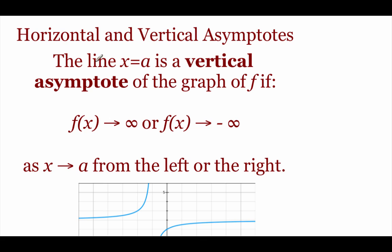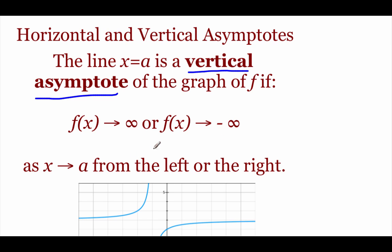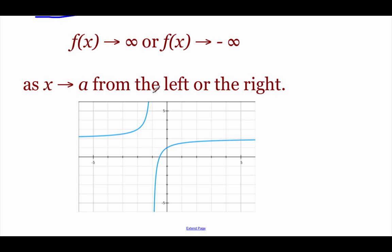A couple of quick definitions. A vertical asymptote: the line x equals a is a vertical asymptote for the graph of a function f if the function values approach either positive or negative infinity as x approaches a. In the first example we approached zero, in the last example we approached one, and in each case we approached either positive or negative infinity depending on which direction we came in from, leaving us with a vertical asymptote that splits the graph into two pieces.